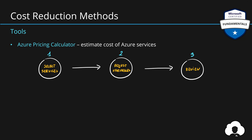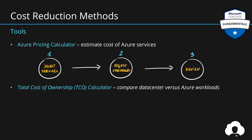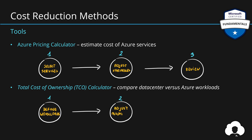The second tool is the total cost of ownership calculator. This calculator is very interesting because it allows you to compare the cost of running certain workloads in your on-premises data center versus in Azure. The process is simple: first you define your workloads, then you adjust assumptions like cost of labor and licenses, then you're presented with a report showing the comparison of running that workload in Azure versus your own data center.